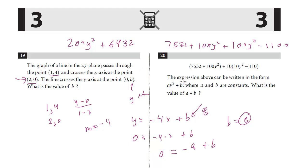Now we're in this form, ay² plus b. Our a is 200 and our b is 6432. So 200 plus 6432, the answer is 6632.